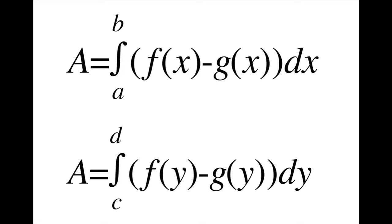Also, if we had two curves f(y) and g(y), both in terms of y, and f(y) was greater than g(y), the area between the two curves would be the definite integral of f(y) — the right curve — minus g(y) — the left curve — with respect to y from c to d.